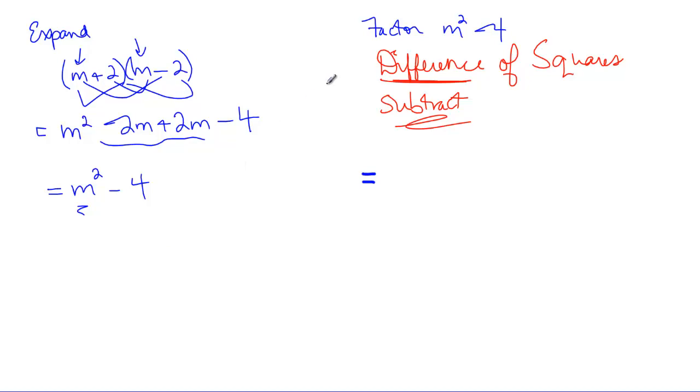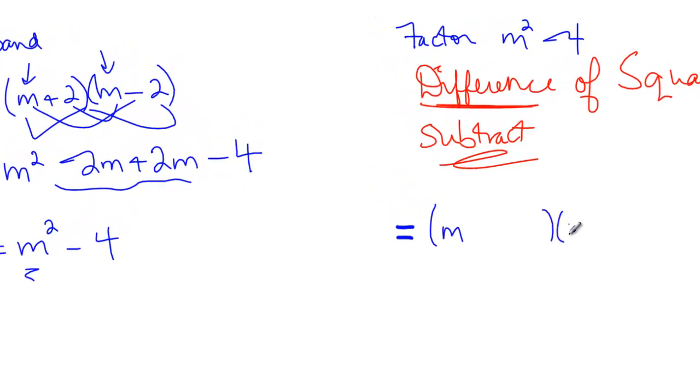I've got m squared and a 4. Those are both squared. They are being subtracted. This is a difference of two squares. To factor it, we go ahead and notice each of the factors had an m. Well, this had an m squared. I know the first thing in each factor is going to be an m. The last thing in each factor was a 2. Where'd that come from? Realize 4 is a perfect square. It is 2 squared. The last thing in each factor is going to be a 2.